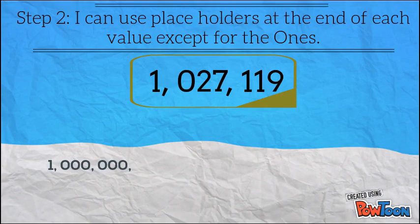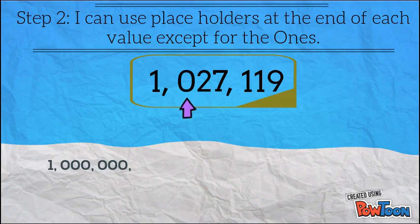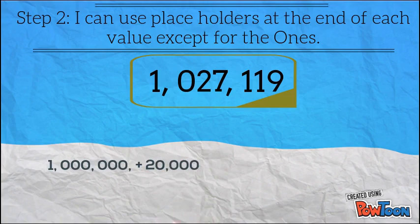Step 2: I can use placeholders at the end of each value except for the ones. We did that for the millions. Now we know there's no hundred thousands, so we can skip that. We add on the two and don't forget the placeholders — so that makes it twenty thousand.